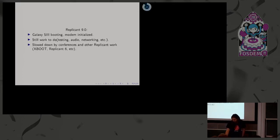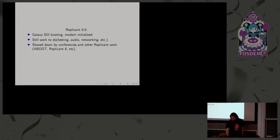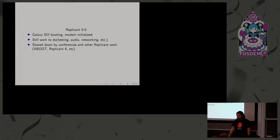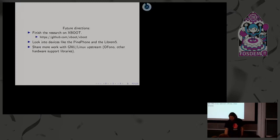We also got funding from NLnet to work on this. We now have the Galaxy S3 booting with an upstream kernel on Android 9. We still need to integrate audio, networking, and so on. We've also been trying to do too many things at once — making conferences, working on bootloaders, and still maintaining Replicant 6 releases — which has slowed down the work.